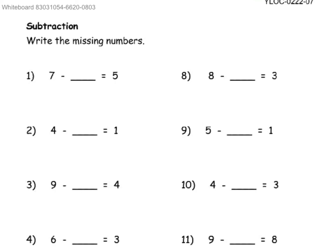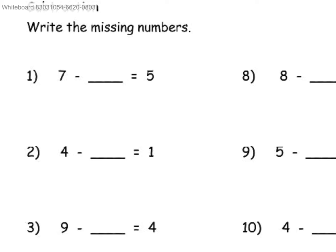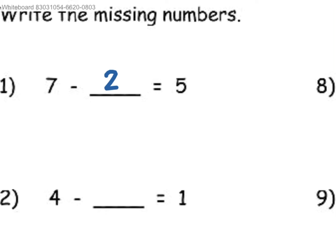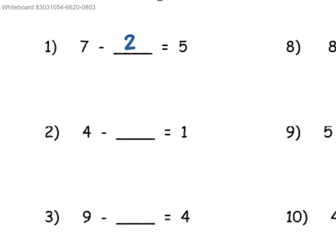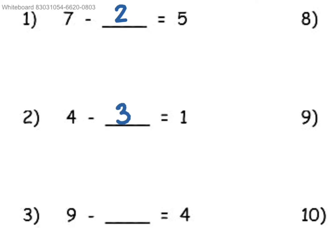Subtraction — write the missing numbers. There are two ways to figure this out. One is to guess and check: 7 minus what number would leave you with 5? If you take away 2 from 7 — 7, 6, 5 — you would end up with 5. So you get 2 from that method. Or you can see how much you add from the number at the end to get the first number: 2 plus 5 is equal to 7, meaning 2 would be your number. Number 2: 4 minus 3 is equal to 1, because 3 plus 1 is equal to 4.